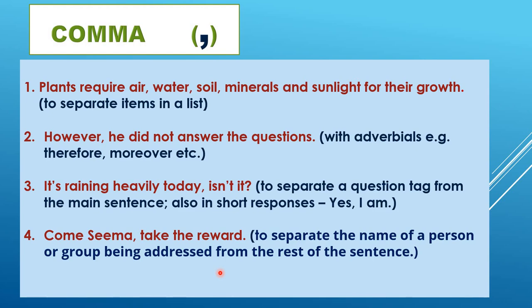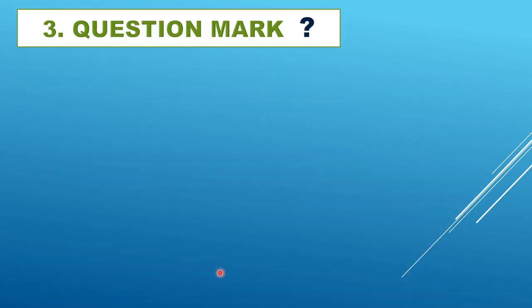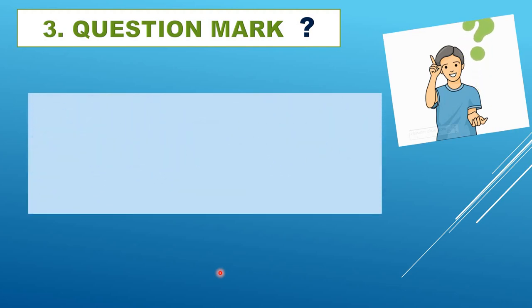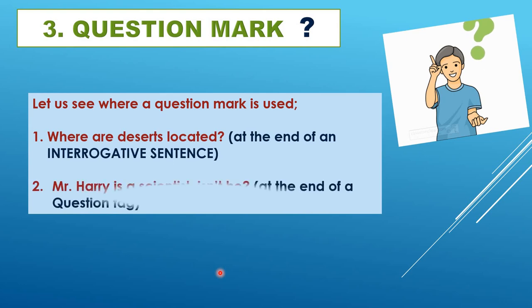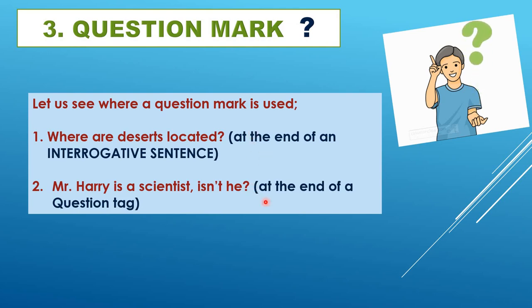Now we go on to the question mark. Question mark shows an interrogation. It is used at the end of an interrogative sentence — for example, 'Where are deserts located?' It is also used for question tags. Remember, there is a comma before the question tag but also a question mark at the end. These are the only two ways a question mark is used.